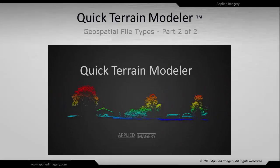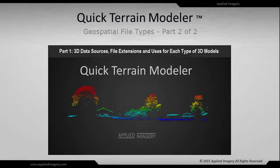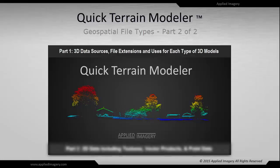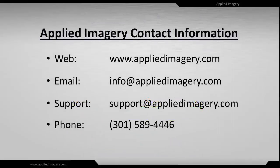In part one of this two-part tutorial we provided a brief overview of 3D data sources, file extensions, and uses for each type of 3D model. In part two we provided a brief overview of 2D data including textures, vector products, and point data. Be sure to check out our other tutorials on our website and please contact us if you have any questions. We will see you in the next one.